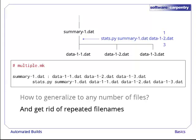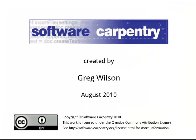And can we get rid of the repeated filenames? Writing data11.dat, data12.dat, data13.dat twice is just asking for trouble. Sooner or later, we'll add a file to one line, but forget to update the other. We'll solve both of these problems together in the next episode.